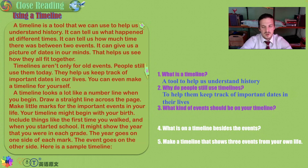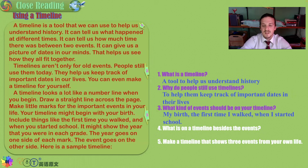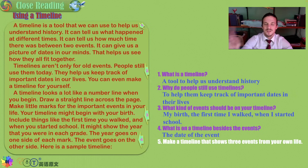What kinds of events should be on your timeline? That is really up to you. Whatever is important to you should be on your timeline. The story gives examples such as your birth or the first time you did something like eating, walking, speaking, starting school, riding a bike, or learning to swim. Besides events, you also need the date to keep everything in order, to know how old you were and what year it all took place.